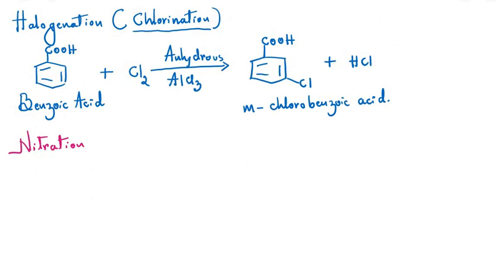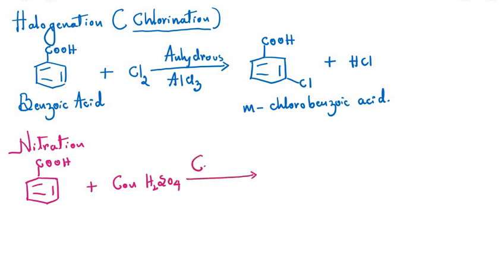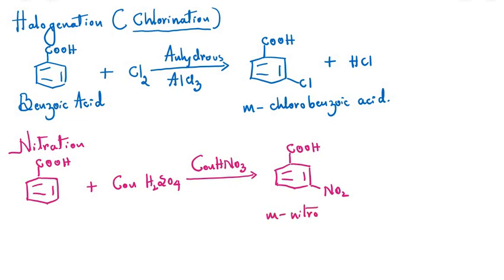Similarly, when benzoic acid is subjected to nitration using a mixture of concentrated H₂SO₄ and concentrated HNO₃, a nitro group is generated and predominantly attacks the meta position, giving meta-nitrobenzoic acid, with H₂O as a side product.